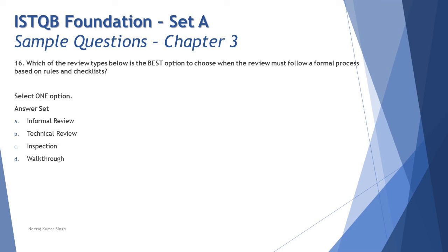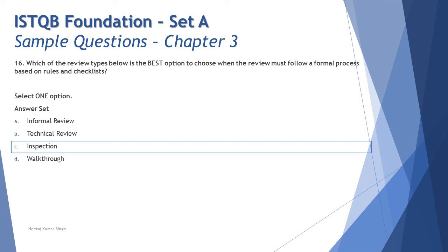Thinking through all four types: informal review — nothing happens as per a formal process. Walkthrough — rules and checklist are not in place. Technical review — you may have process and management participation but not mandatory rules and checklist. The most formal review type is inspection, and inspection certainly consists of rules and checklist used as a mandatory step. So the straightforward right answer here is C — inspection.